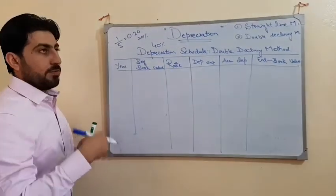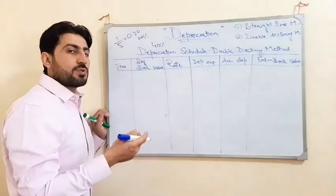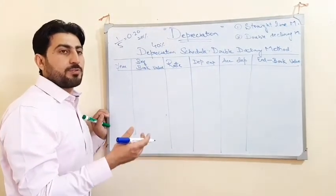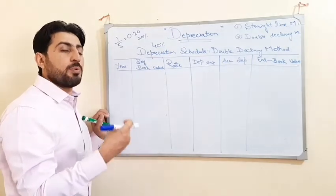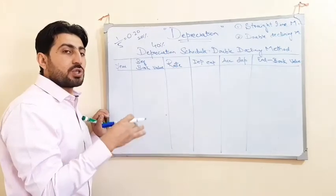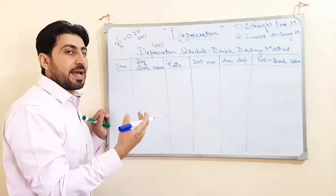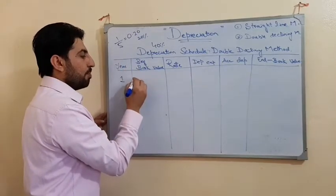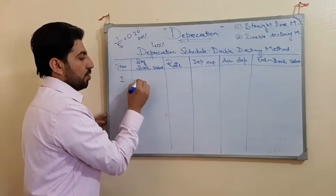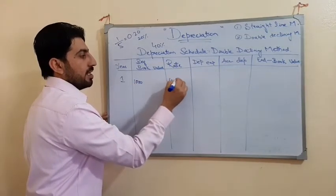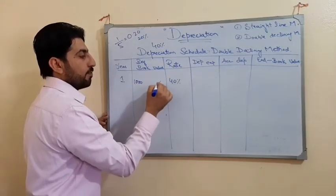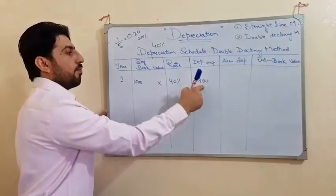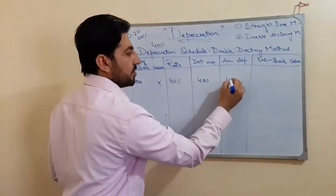Using the same previous question: Ali purchased a piece of equipment for rupees 1,000 and the scrap value was 100, so the depreciable cost was 900. The beginning book value of that equipment is 1,000. The rate applied is 40%. So 1,000 multiplied by 40% gives a depreciation expense of 400 for the first year. The accumulated depreciation for Year 1 is also 400.